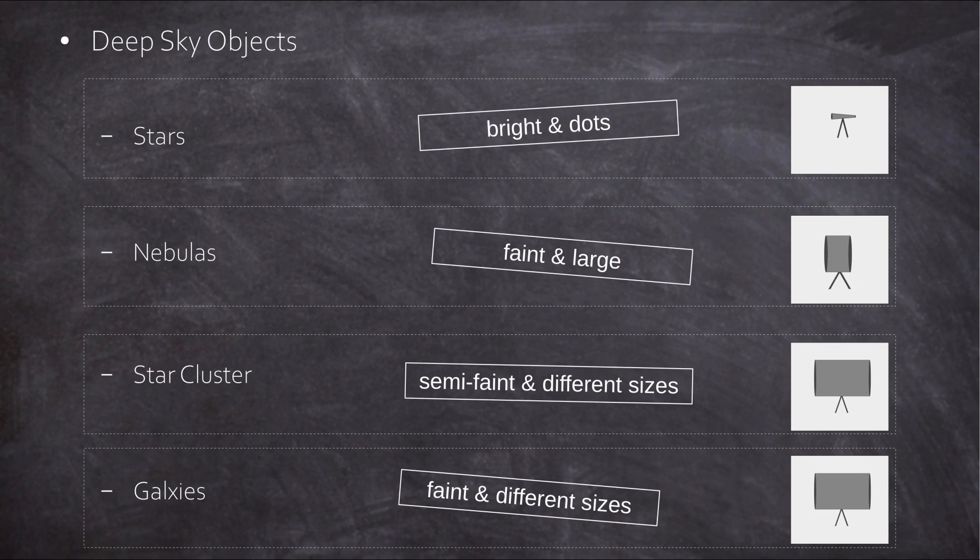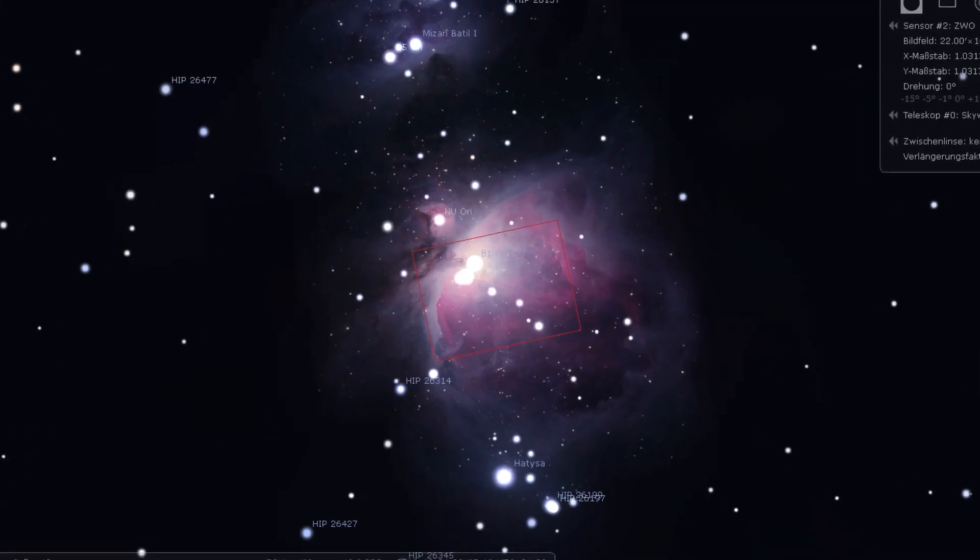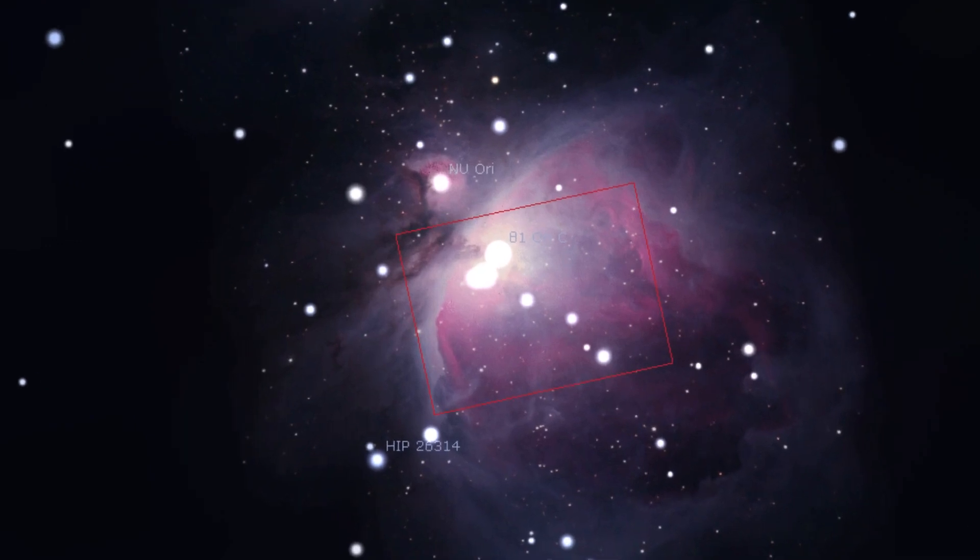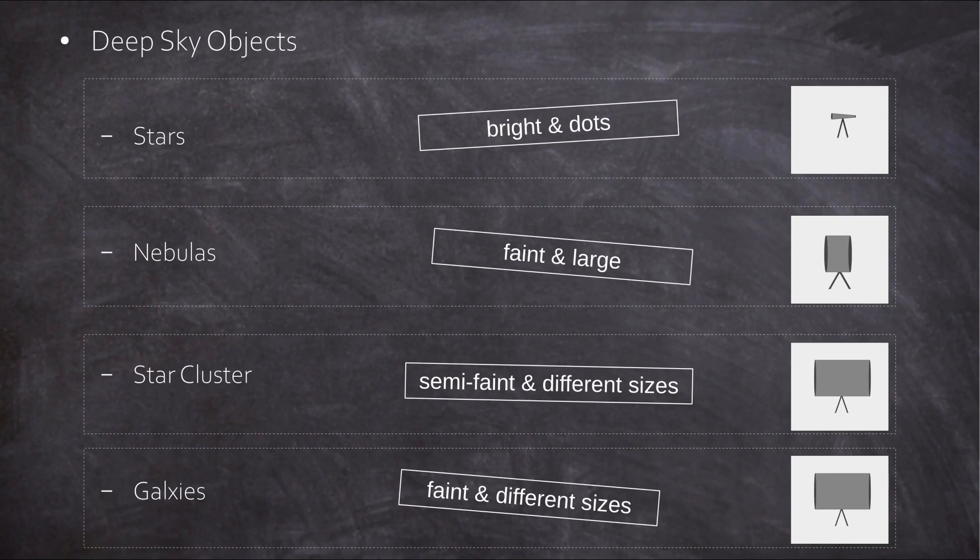The deep sky objects? Nebulas are huge and so are many galaxies. Deep sky imaging is not about magnification. Most objects would be cut in pieces if magnified too much. The opposite is true. You need a short but wide scope for most deep sky objects. Only faint and distant galaxies call for longer equipment.